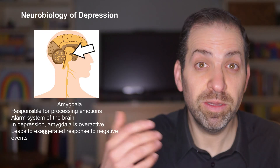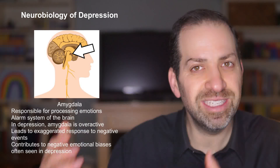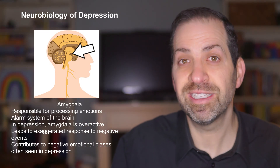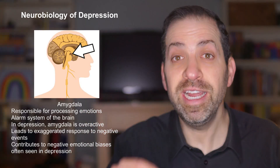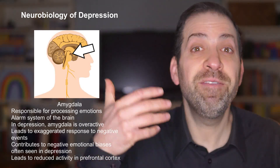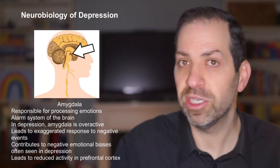Research has found that people with depression have increased activity in the amygdala when they're exposed to negative emotional stimuli like sad or angry faces. This heightened activity can contribute to the negative emotional biases commonly seen in depression, making it difficult to see positive aspects of a situation and leading to that pervasive sense of hopelessness and despair. Additionally, overactivity in the amygdala can lead to changes in other areas of the brain — increased amygdala activity has been linked to reduced activity in the prefrontal cortex, making it even harder to regulate emotions, make decisions, and plan for the future.